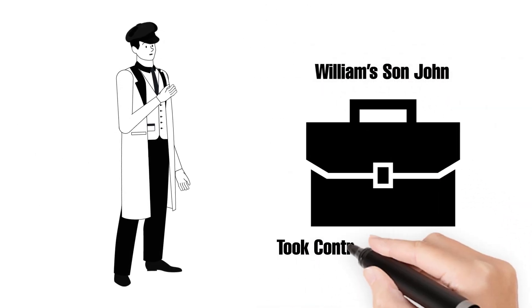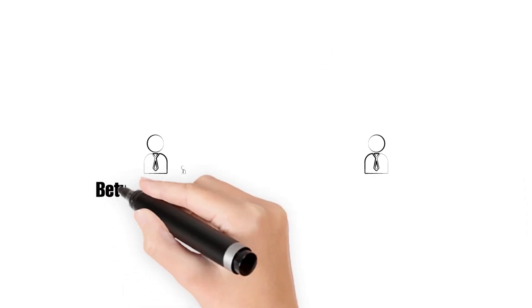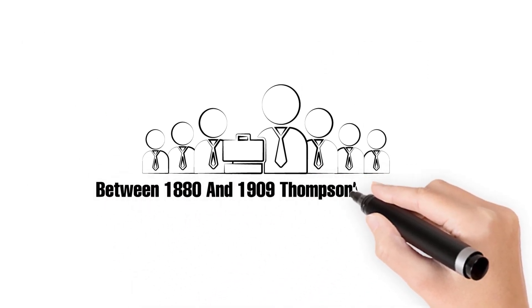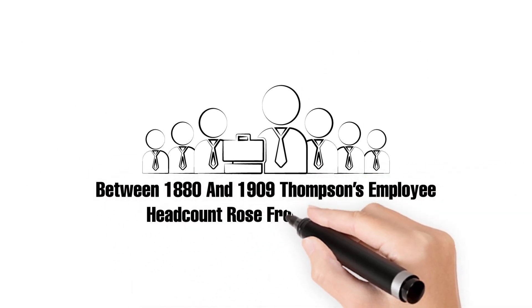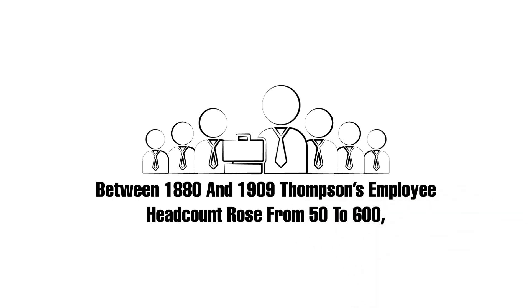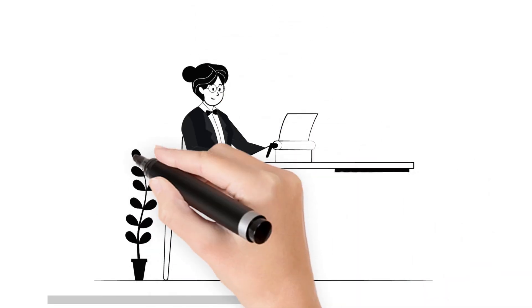William's son John took control of the business. Between 1880 and 1909, Thomson's employee headcount rose from 50 to 600, including the first female employee.